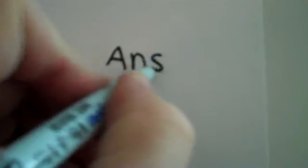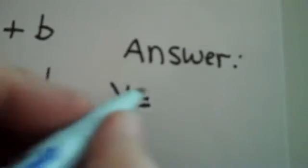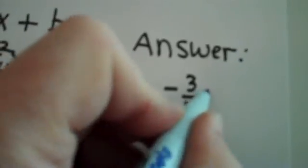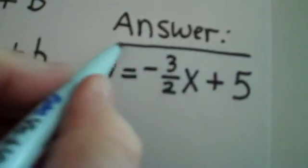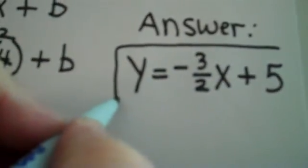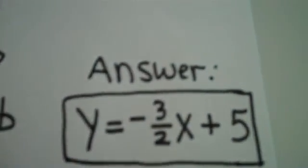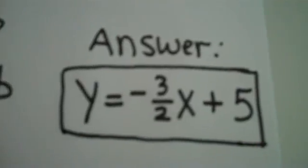So now to get my final answer to the problem, I write y equals, remember that m was -3/2, so that is what goes in front of the x, and we just found out that b was 5. And we're done.